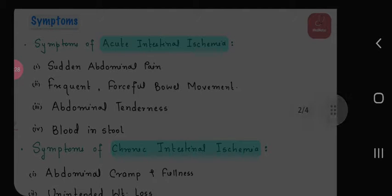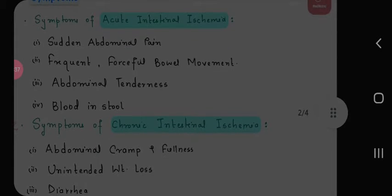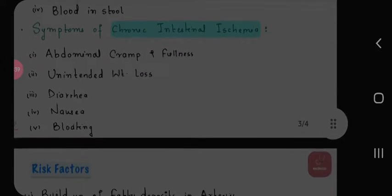Symptoms of acute intestinal ischemia include sudden abdominal pain, frequent forceful bowel movements, abdominal tenderness, and blood in stool.